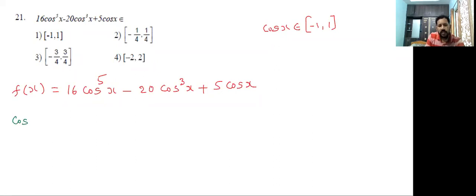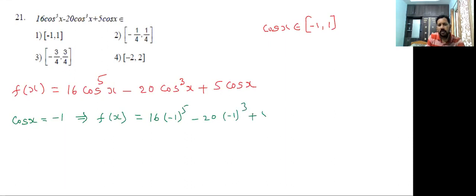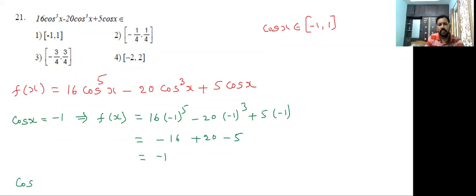If cos x value is -1, what happens? f(x) = 16(-1)⁵ - 20(-1)³ + 5(-1). We get -16, then +20, minus 5. Overall answer is -1. So if cos x equals -1, then f(x) equals -1.